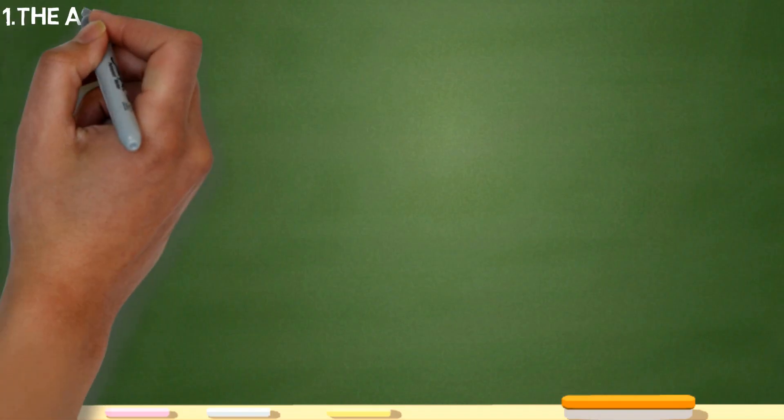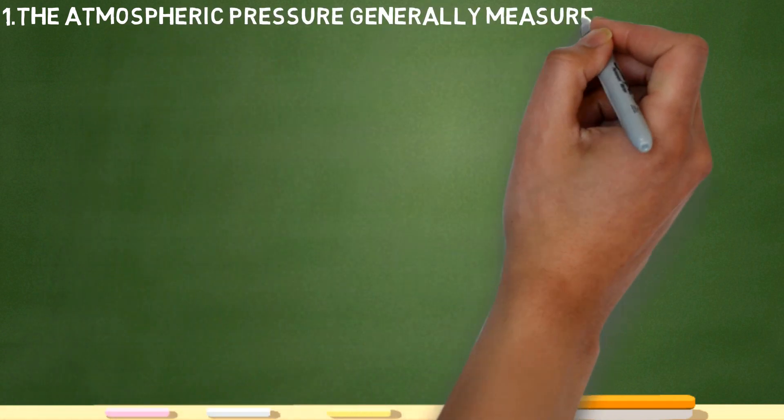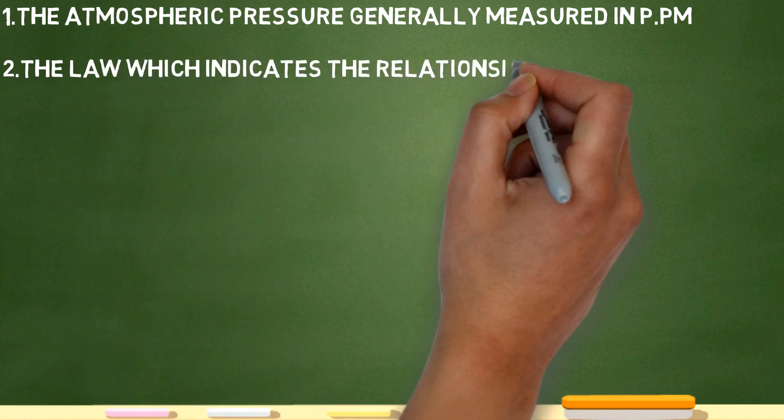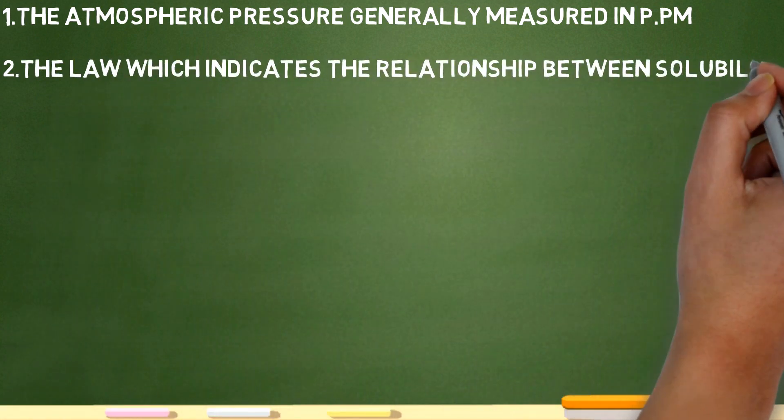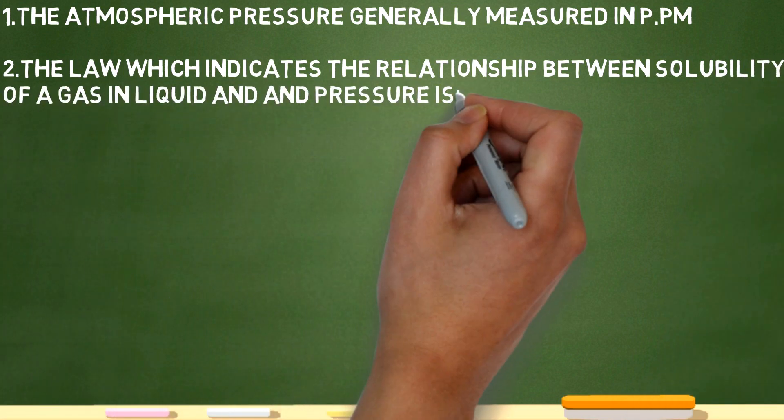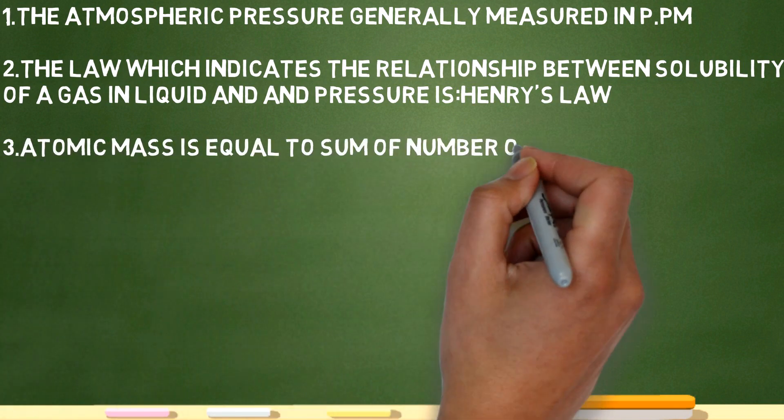The first question is, how do we measure the atmospheric pressure? We measure in PPM. The second question is, the law which indicates the relationship between the solubility of a gas in liquid and pressure is Henry's law.